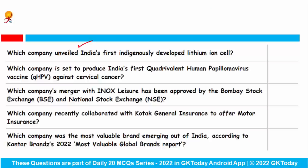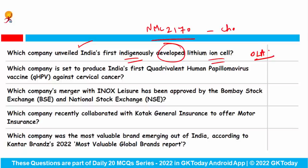Which company unveiled India's first indigenously developed lithium-ion cell? Ola Electric has launched the country's very first indigenously developed lithium-ion cell. The company is set to begin mass production of the cell NMC 2170 from its Chennai-based Gigafactory by 2023. The cell packs more energy in a given space and improves the overall life cycle due to the specific chemicals and materials used.